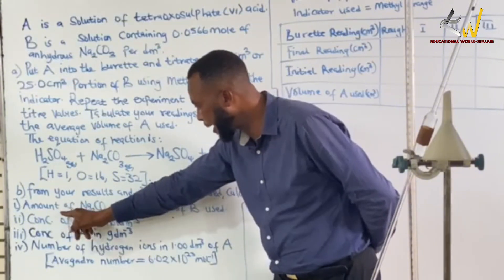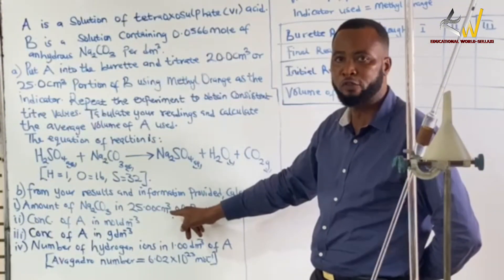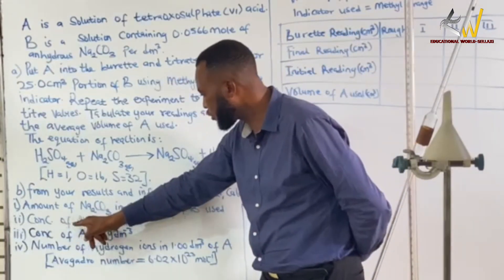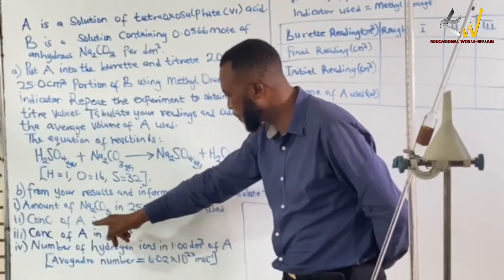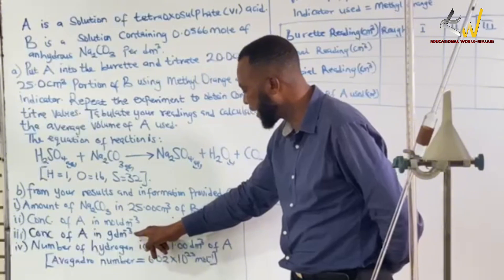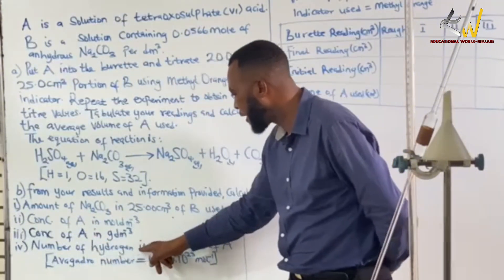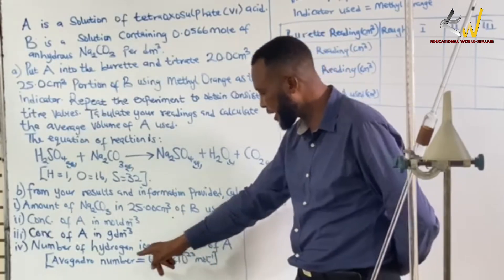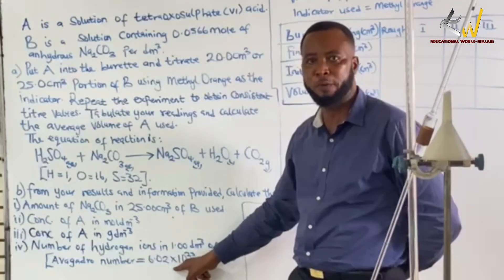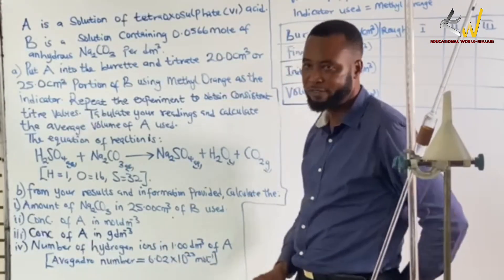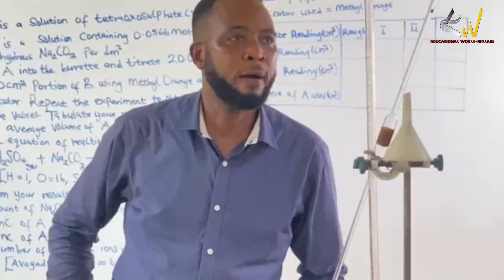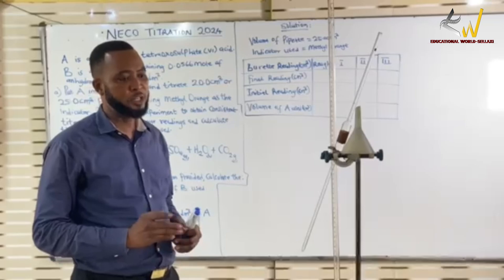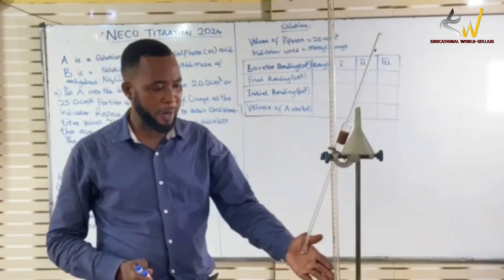The questions ask: calculate the amount in moles of sodium carbonate in 25.00 cm³ of solution B; find the concentration of the acid in mol/dm³; and find the number of moles of HCl in 1000 cm³ of solution A. Before I start, I'll tell you how I got my values.